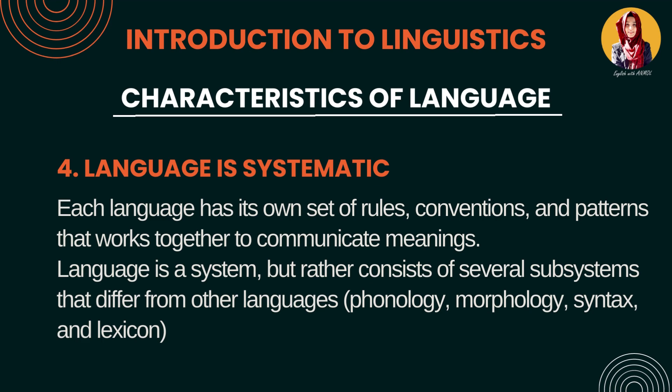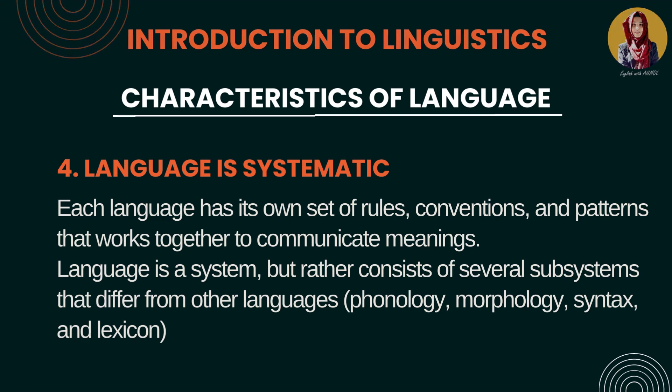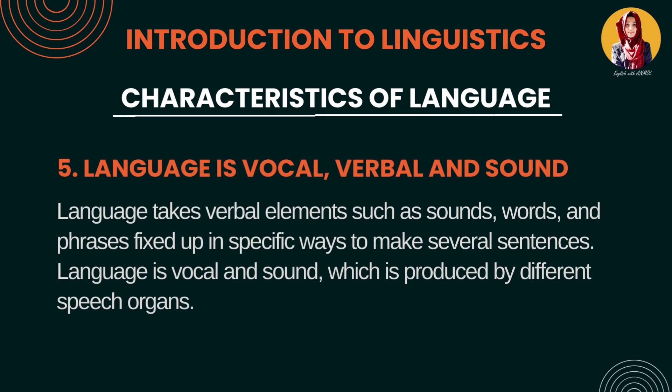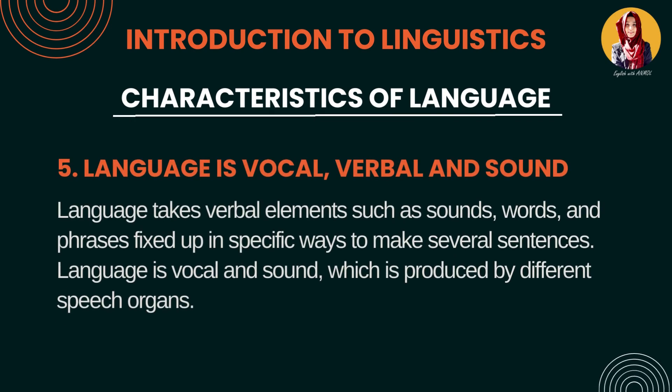Number 5: Language is vocal, verbal and sound. Language ke paas verbal elements hote hain — sounds hote hain, words hote hain. Yeh vocal aur verbal isliye hai kyunki jab hum log language produce karte hain to hamare articulatory organs involved hote hain, jinhe hum speech organs bhi kehte hain, jisse hum log different sounds create karte hain. That's why we call language vocal, verbal and sound.